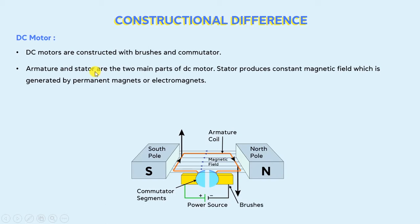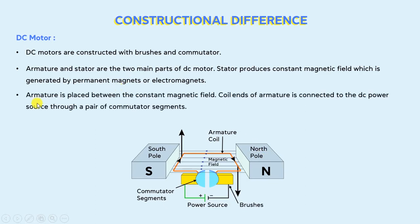The two main parts of a DC motor are armature and stator. Stator produces a constant magnetic field which is generated by permanent magnets or electromagnets — as you can see, these are the two magnets which produce a constant magnetic field. The armature is placed between the constant magnetic field. The coil ends of the armature are connected to the DC power source through a pair of commutator segments.